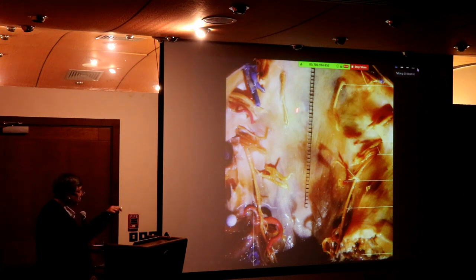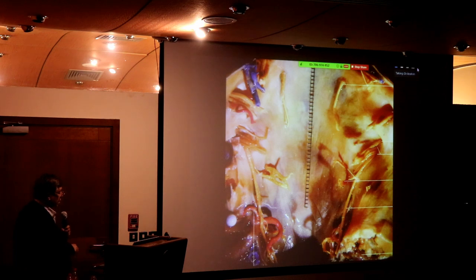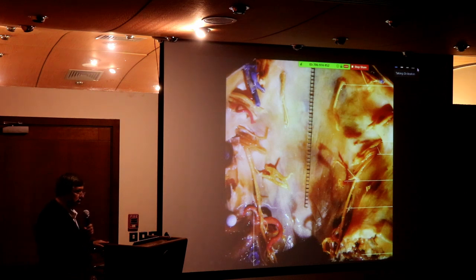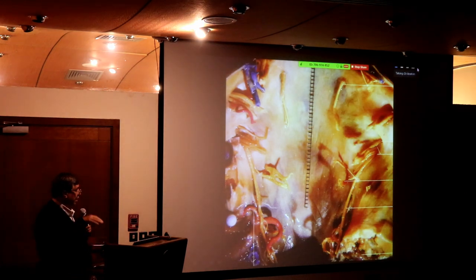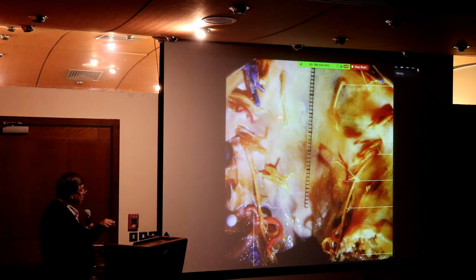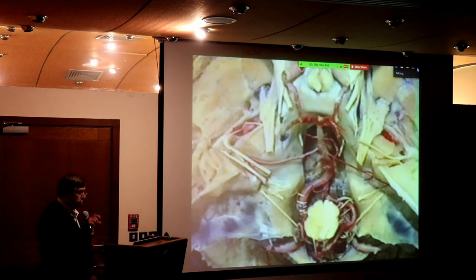This is a small area — few centimeters in length, few centimeters in width. Everything is there: the abducent nerve, the trigeminal nerve, seventh and eighth nerves, the lower cranial nerves, and the hypoglossal nerve — all condensed in a small area.